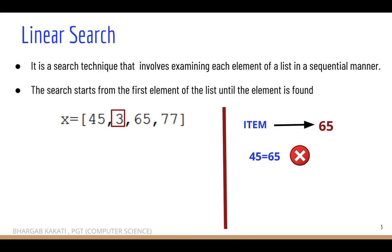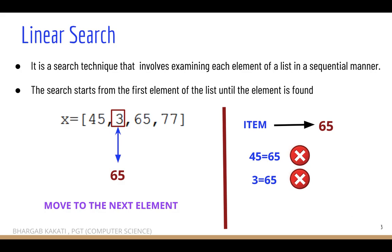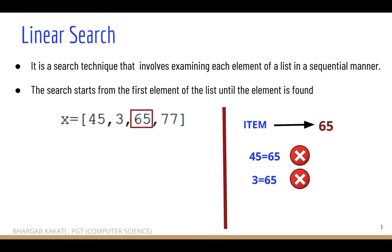The next element is 3. Now 3 will be compared with 65, because 65 is the element to be searched. Is 3 equal to 65? No, 3 is not equal to 65. So it will move to the next item of the list, which is 65. Is 65 equal to 65? Yes, 65 is equal to 65.